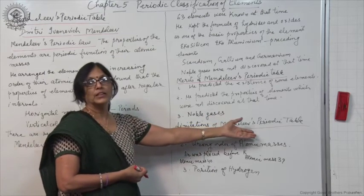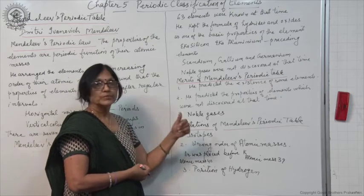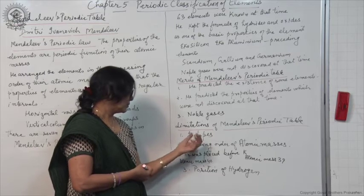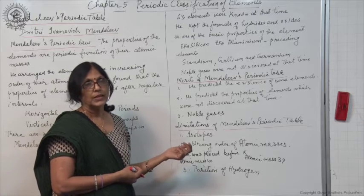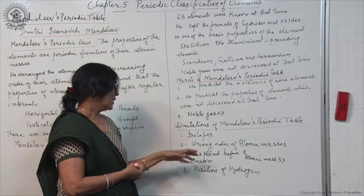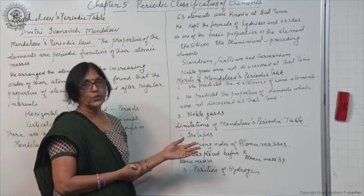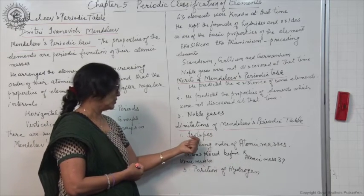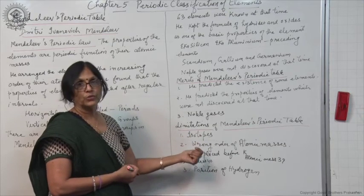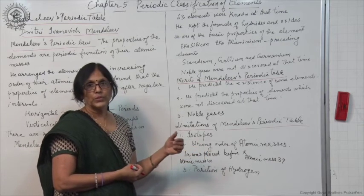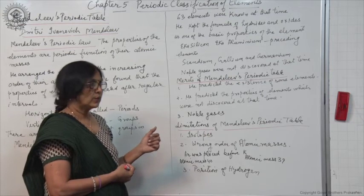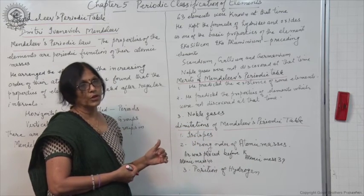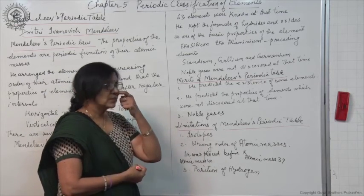Now, let us come to the limitations of Mendeleev's periodic table. Because elements are arranged in increasing order of atomic masses, it was not possible to place isotopes properly. Isotopes are atoms of an element having the same atomic number but different atomic masses. Isotopes have similar properties and cannot be placed separately, but they also cannot be placed together because they have different atomic masses. Also, to group elements with similar properties together, he had to place an atom with higher atomic mass before an element of lower atomic mass, resulting in a wrong order of atomic masses.